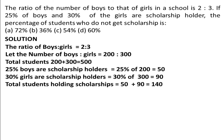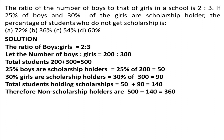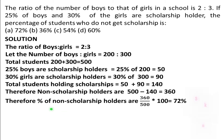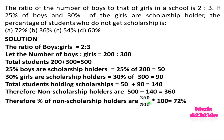Now for non-scholarship holders: total students are 500, minus 140 scholarship holders = 360 non-scholarship holders. Percentage of non-scholarship holders = 360 upon 500 into 100 = 72%. So the answer is Option A, 72%.